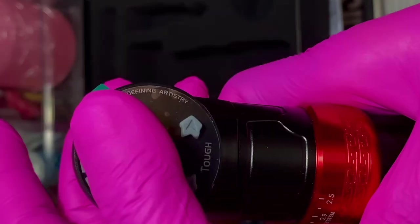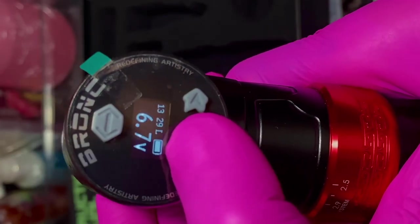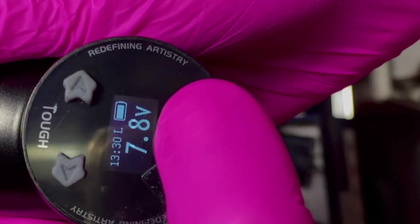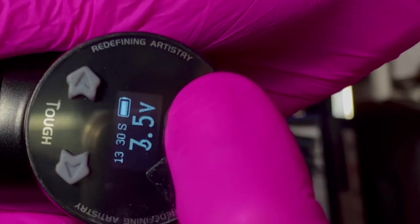Long press the power button to turn on. Double-click the power button to switch from liner voltage to shader voltage.